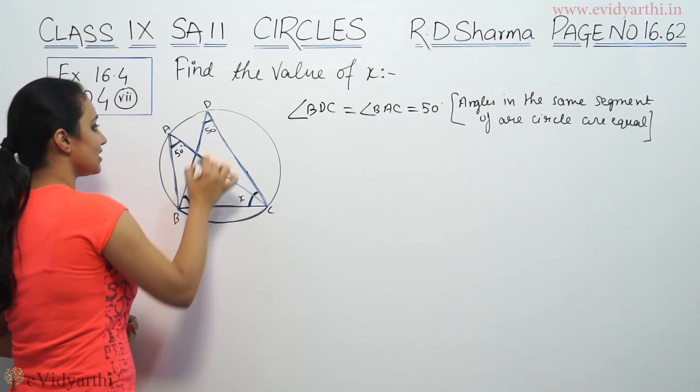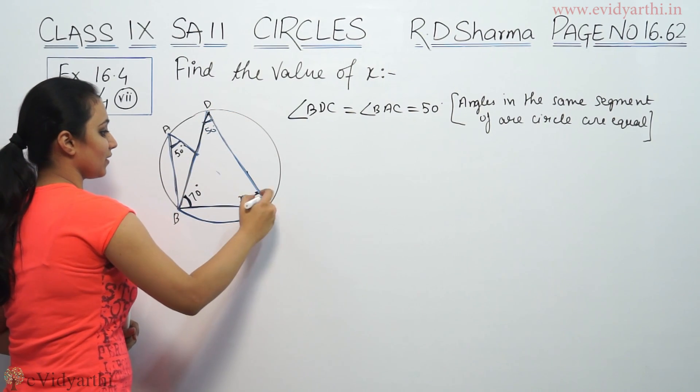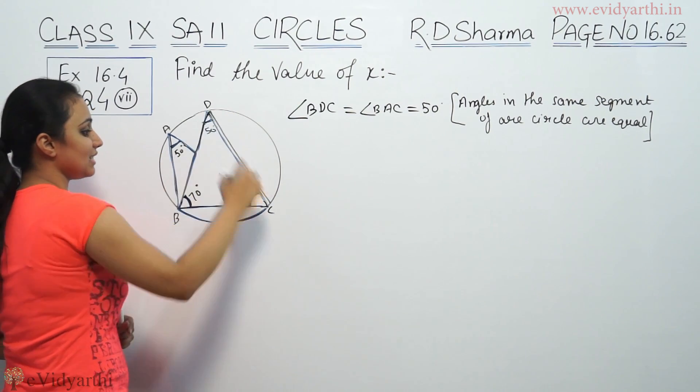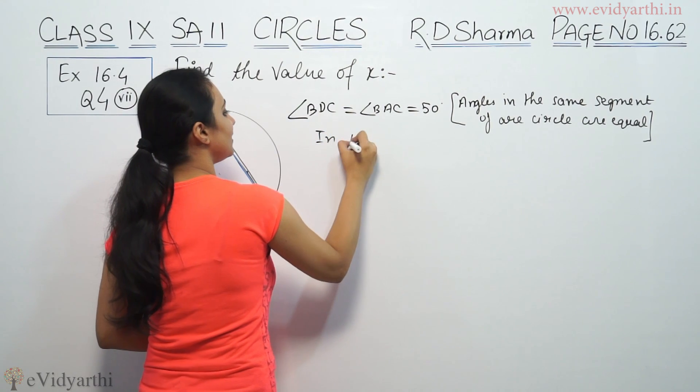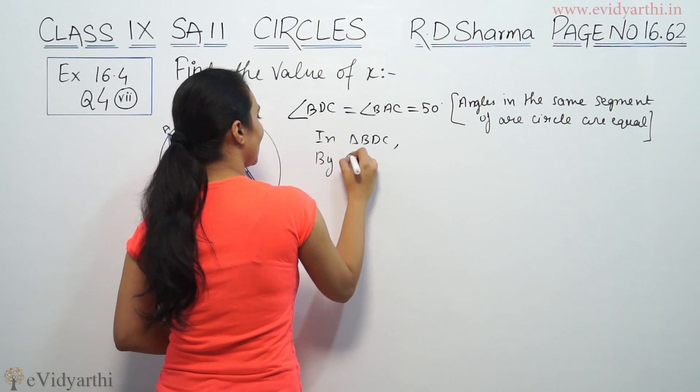Now, what do we say? If it is 70 and it is 50, then we will talk about this triangle. We will talk about this triangle. This is DBC. So in triangle BDC, by angle sum property...